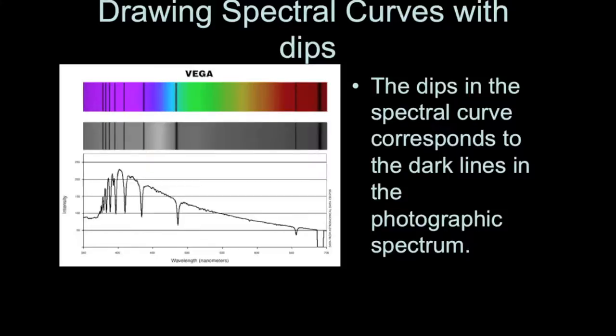If you wanted to go from a photographic spectrum and then draw a spectral curve, the first thing you need to know is where the dark lines are going to be and the relative spacing between them. Notice how in the Vega spectrum there are some closely spaced dark lines and then as you go to redder wavelengths the dark lines are more widely spaced occasionally. That same pattern of where the spacing of the dark lines will be is going to be the same pattern where the absorption dips in the spectral curve are going to be.